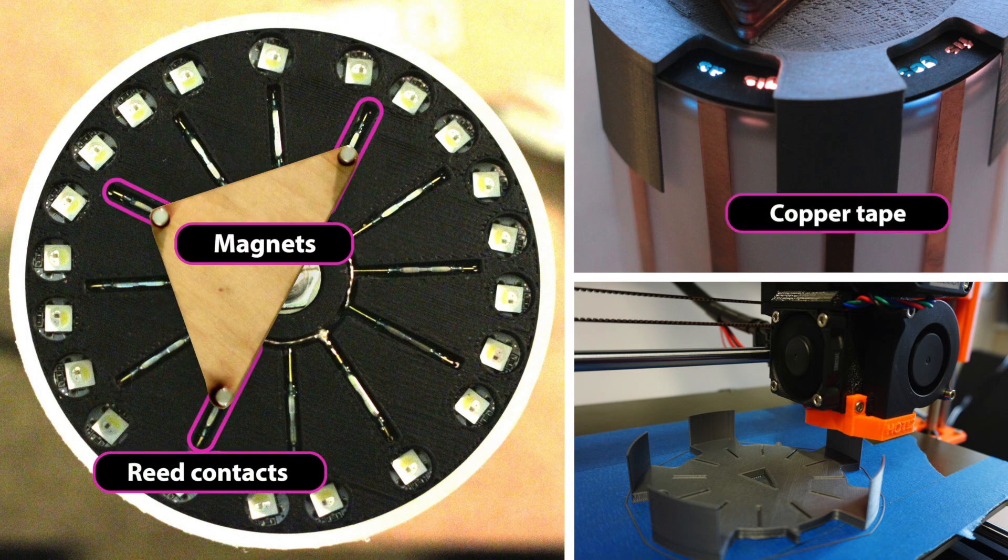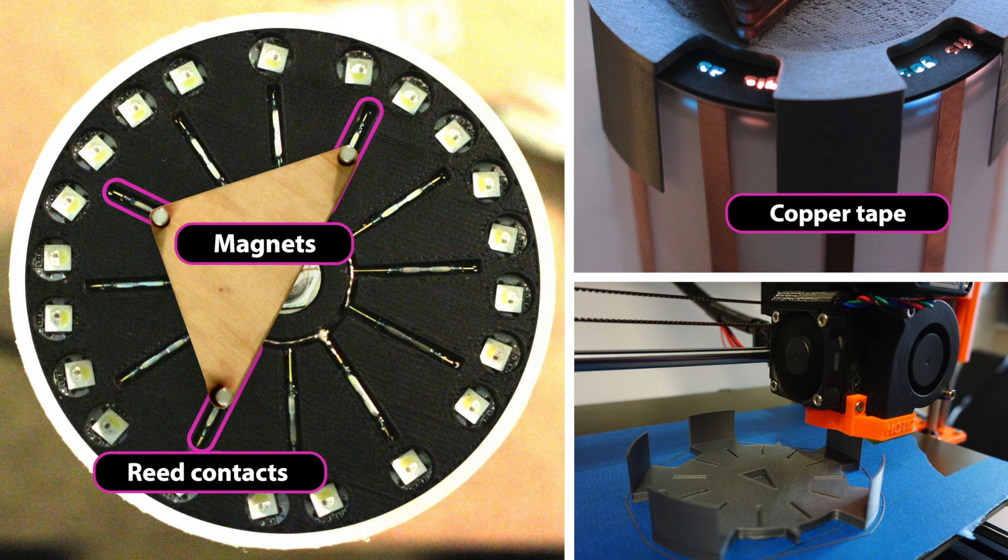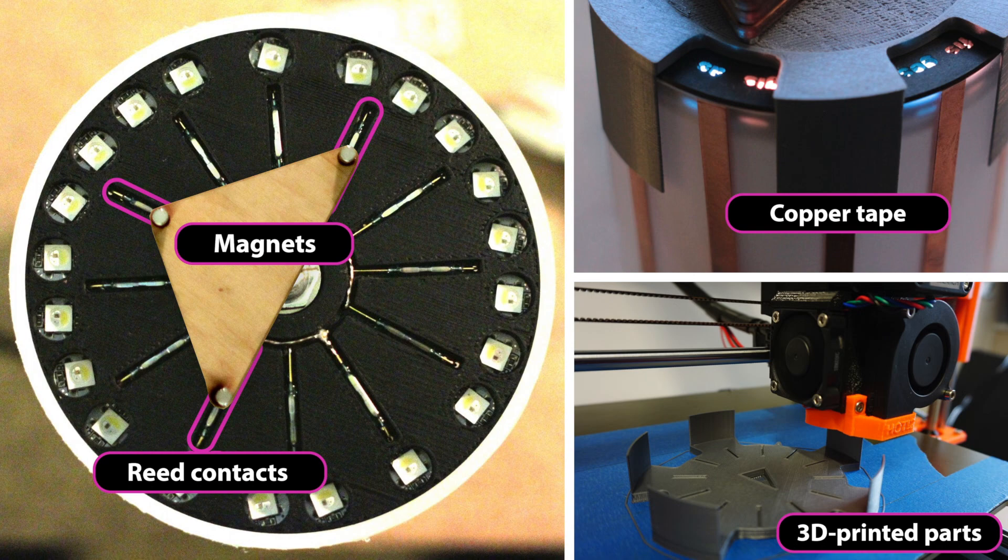To sense touch input, we use copper tape and capacitive sensing. Finally, our scale caps are 3D printed.